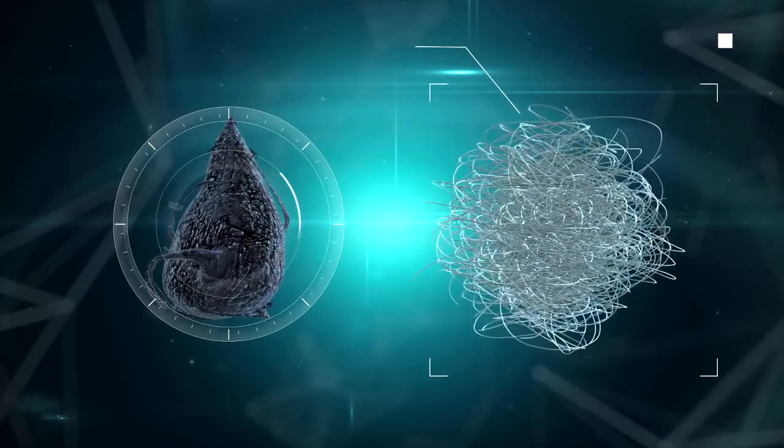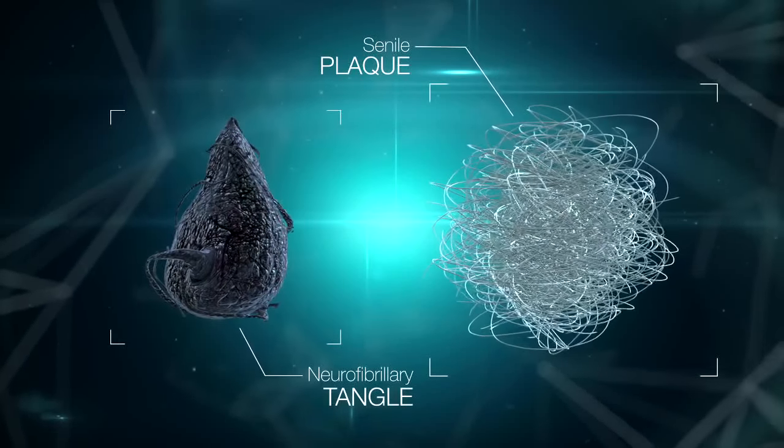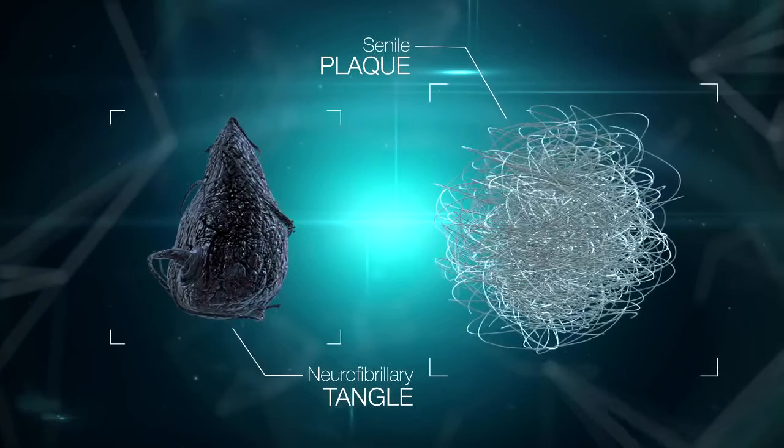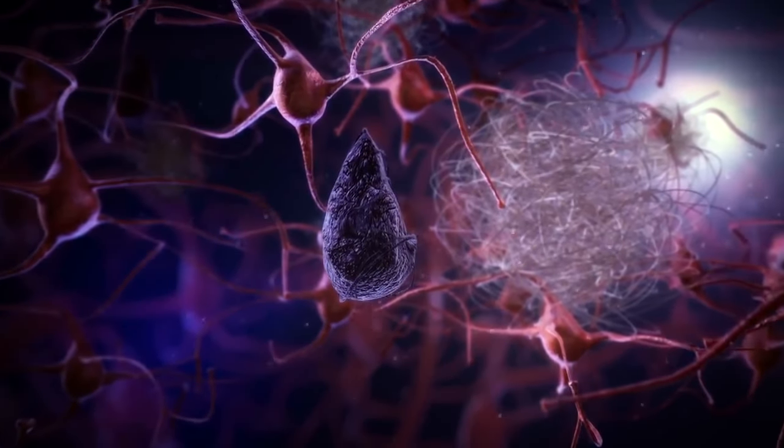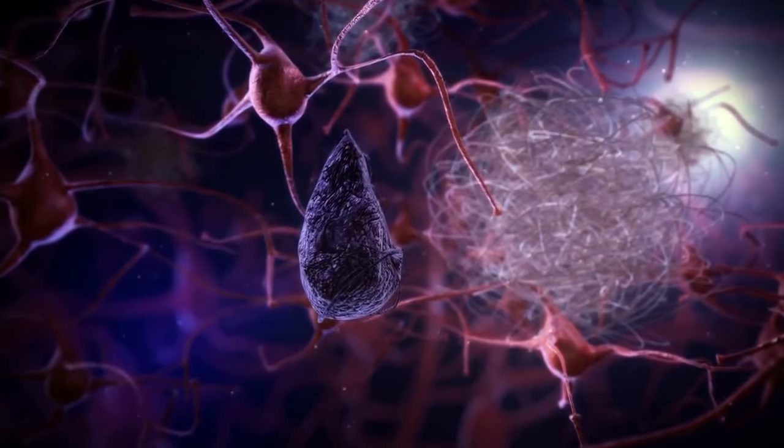The two lesions spread throughout the brain. We know that the presence of the two cerebral lesions is necessary to develop Alzheimer's disease, since one does not come without the other.